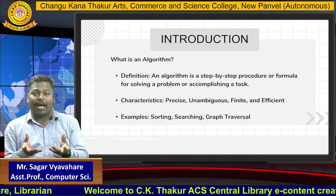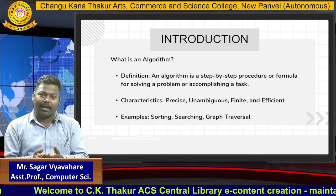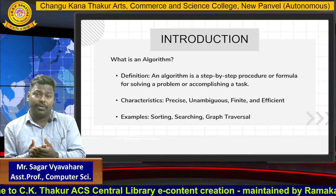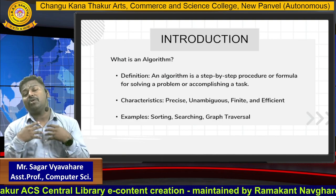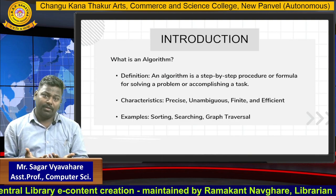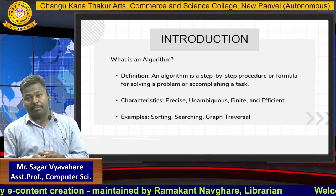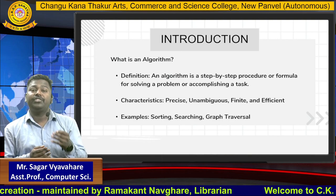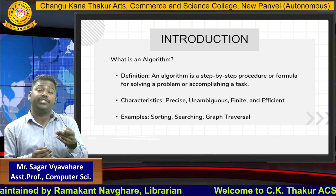For example, it should not happen that you are making tea and something else comes out. Similarly, if you create an algorithm for some purpose and that purpose is not fulfilled, then the algorithm is of no use. That is what efficiency means — the algorithm should generate the correct, efficient result.